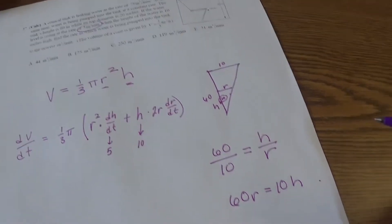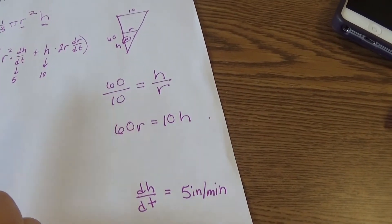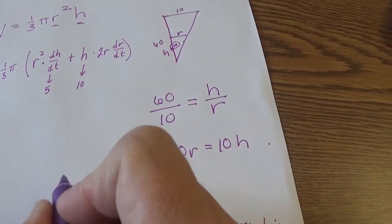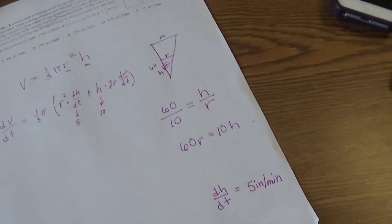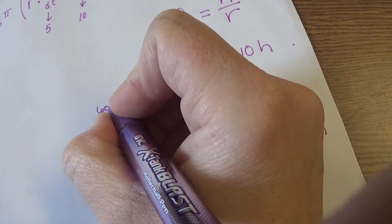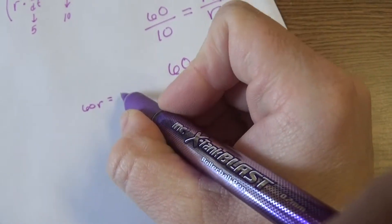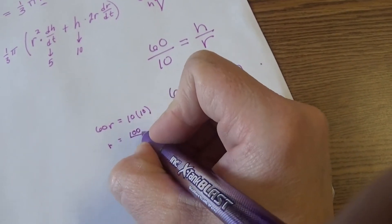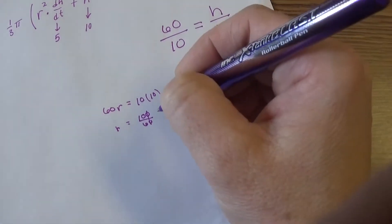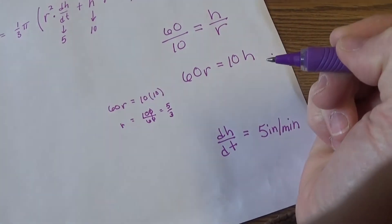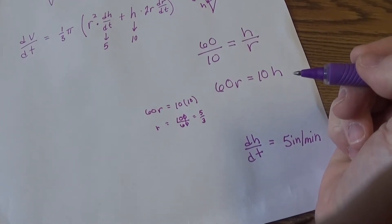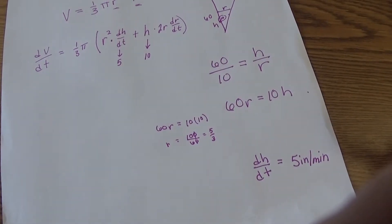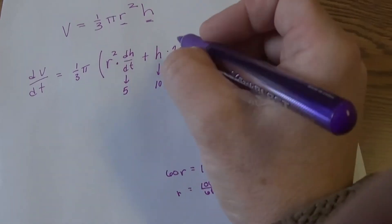What I can plug in: I know the height right now is 10, I know dh/dt right now was the rate the water was rising at 5 inches per minute. So this is going to be 5. And now I've got some figuring to do to figure out stuff about r. So come back over here to my ratio. If h is 10, what will r be?